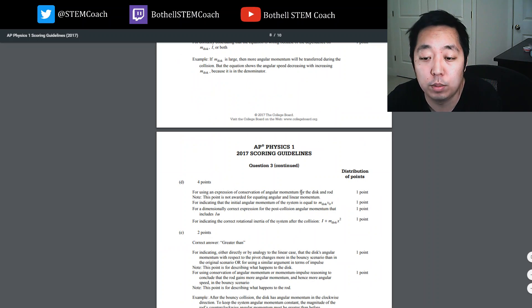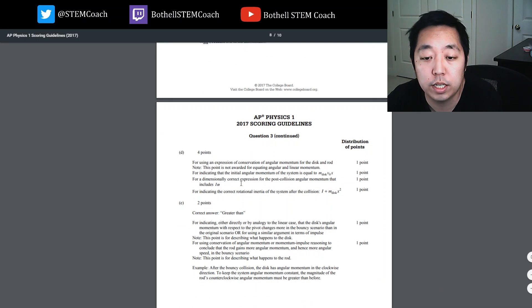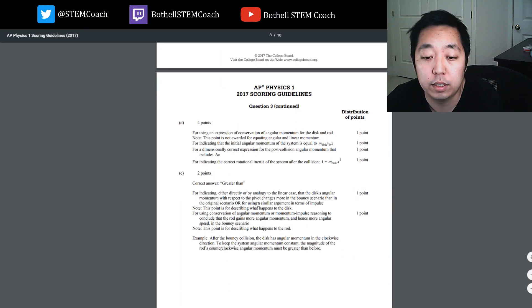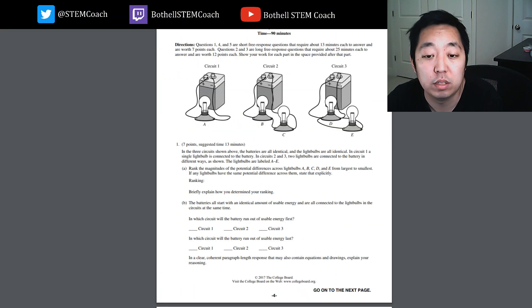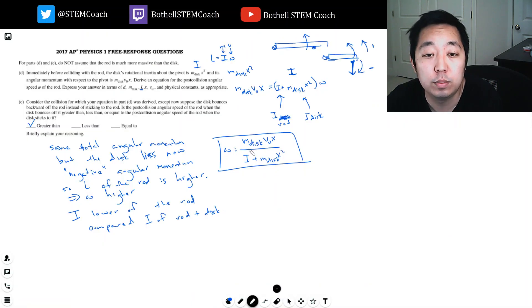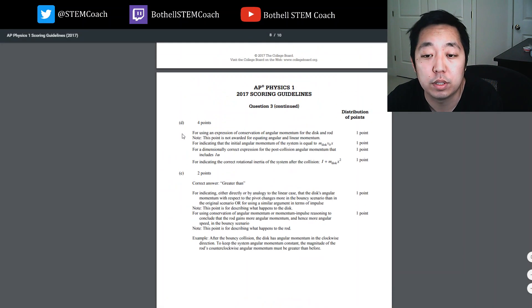Part D, using conservation of angular momentum, for indicating the angular momentum is equal to mdisc, for initially correct. For indicating correct rotational inertia. And greater than. Yeah, okay, good. I'm a little surprised they didn't ask for an answer in D. I mean, we set it all up correctly.